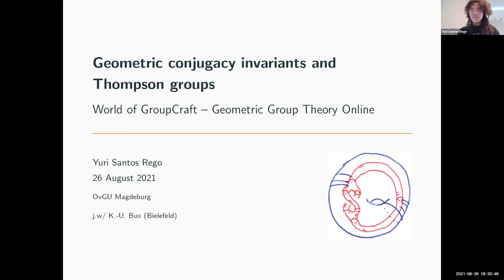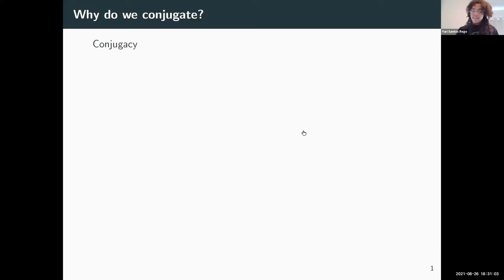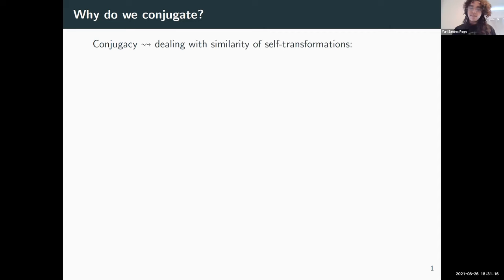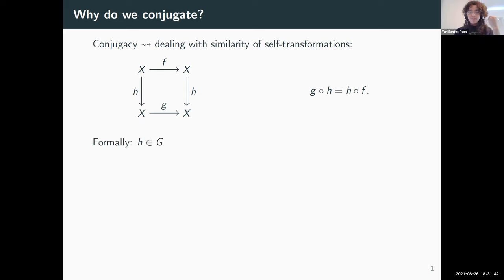When I read the conference title, I just assumed we would discuss games, so that's what we are doing today. We are entering a dungeon called conjugacy classes. Conjugacy is how we formalize the concept of studying self-similarity of transformations. Recall from linear algebra: if you have a vector space and two linear transformations, you say they are similar if you can find an automorphism of your vector space that makes the diagram commute. You can also picture other things here, like nice topological spaces.